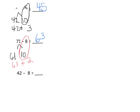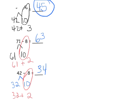The last one on this slide, we're going to decompose 42 to 32 and 10. Now we can subtract our 8, so 10 minus 8 is 2. So 32 plus 2 gives us the correct answer of 34.